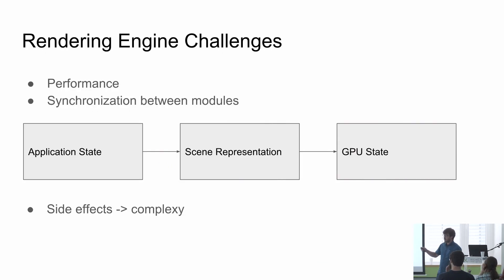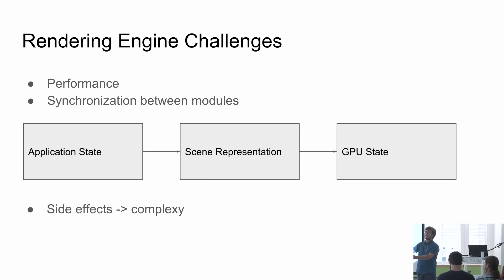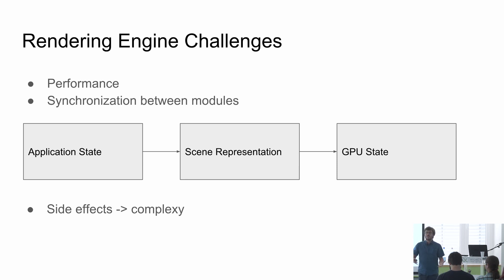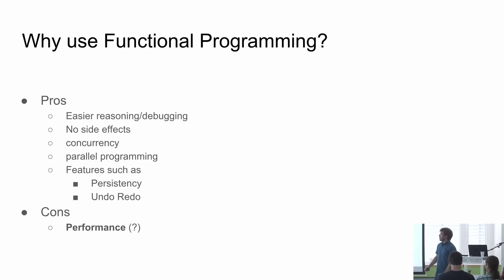The main challenges in rendering engines are performance and synchronization between involved modules: we have an application state, a scene representation which represents the application state in a more graphical sense — characters, objects which are transformed — and a GPU state where we need to make those views consistent. And all we do to make those things consistent is by doing side effects, which is of course the problem.